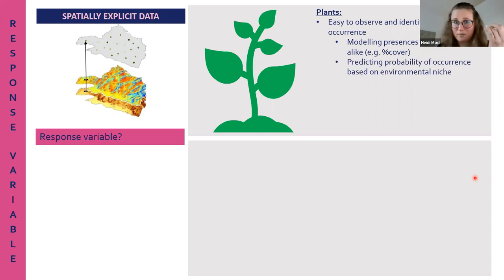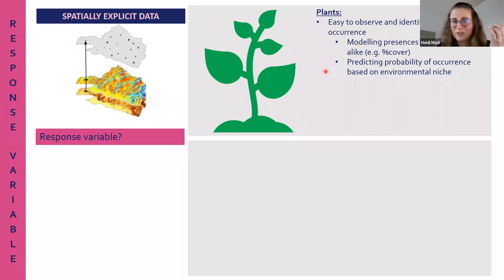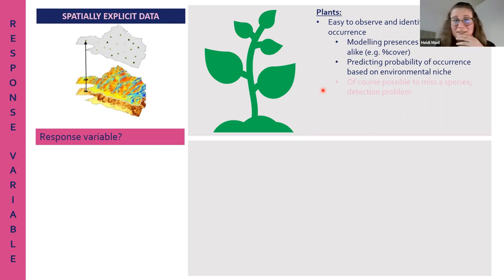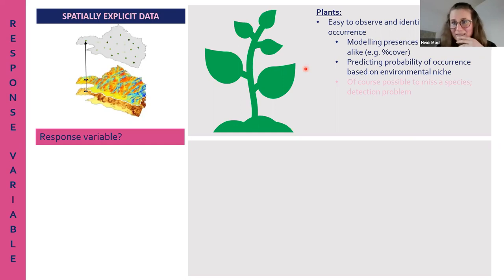This is a mathematical detail: even though we are modeling presences and absences, what we are predicting is a probability of occurrence made based on the environmental niche quantified from the data and model. Of course, it's possible to miss a species - this is called the detection problem in SDM literature. For plants, we generally have quite high certainty about whether we have observed something. For animals, the detection problem is bigger because the species may occur there but not at the exact time of observation.